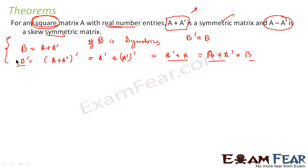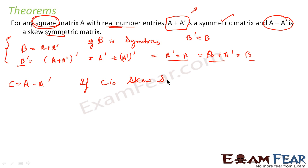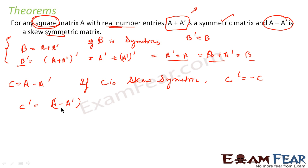Now I have to prove the second part: A minus A dash is a skew-symmetric matrix. Let C be the matrix A minus A dash. If C is skew-symmetric, then C transpose will have to be equal to minus C. So we have to prove this. Let's find C transpose first, which equals (A minus A dash) whole transpose.